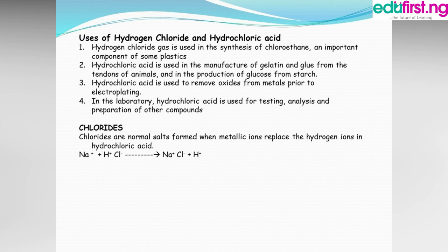Uses of hydrogen chloride and hydrochloric acid: Hydrogen chloride gas is used in the production of chlorine and is an important component of some plastics. It is used in the manufacture of gelatin and glue from animal tendons, and in the production of glucose from starch. It is also used to remove oxides from metals prior to electroplating. In the lab, hydrochloric acid is an important acid used for testing and in the preparation of other compounds.